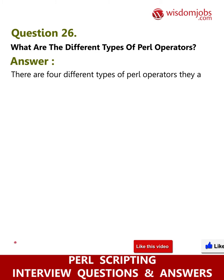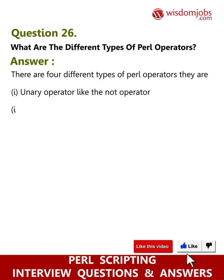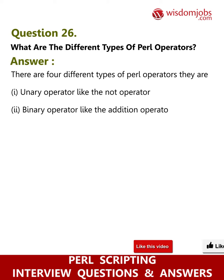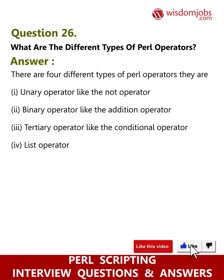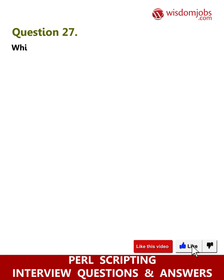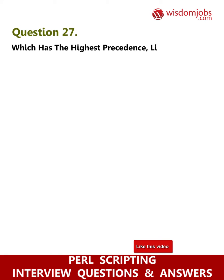Question 26: What are the different types of Perl operators? Answer: There are four different types of Perl operators: i) unary operator, like the not operator; ii) binary operator, like the addition operator; iii) tertiary operator, like the conditional operator; iv) list operator, like the print operator.